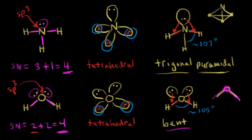So these are examples of three molecules where the central atom — in all three cases — is sp3 hybridized. This allows us to figure out the overall molecular geometry, think about bond angles, and understand how hybrid orbitals affect the structure of these molecules.